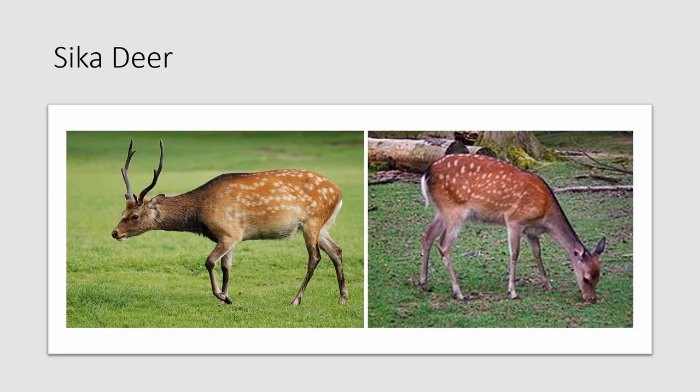The sika deer is the first of the introduced species. Originally found in East and Southeast Asia, it has been introduced mostly into Texas, but also some other states like Oklahoma, Kansas, and Wisconsin. It is one of three introduced species with spots, though in the winter it is unspotted. It has a very short tail, which is white and ringed with a black semicircle, and a dark line going down its back.